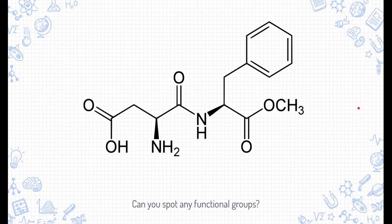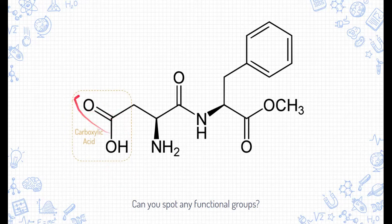All right. Did you spot any functional groups? Well, let me show you the ones that I see. Starting on the very left-hand side, this is carboxylic acid. This carbonyl group has a carbon-oxygen double bond. And then there's a side jaunt over here where hydroxide is.